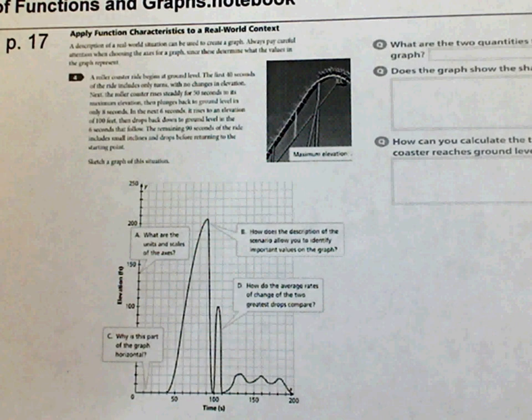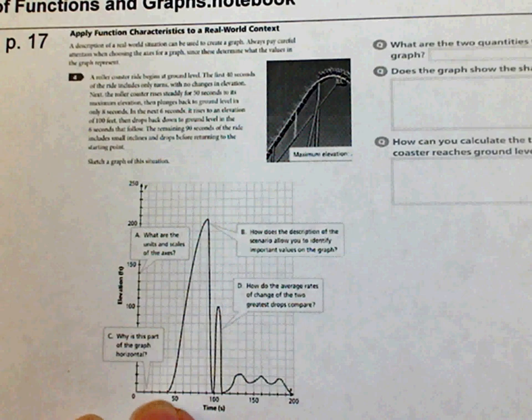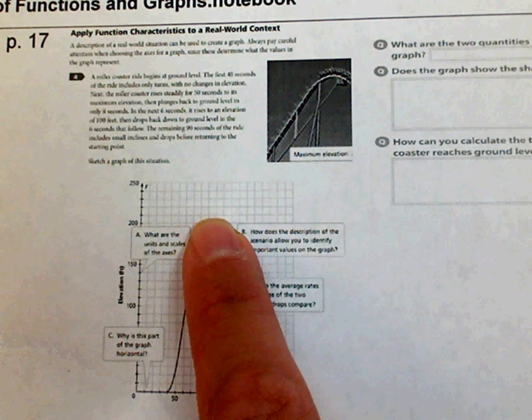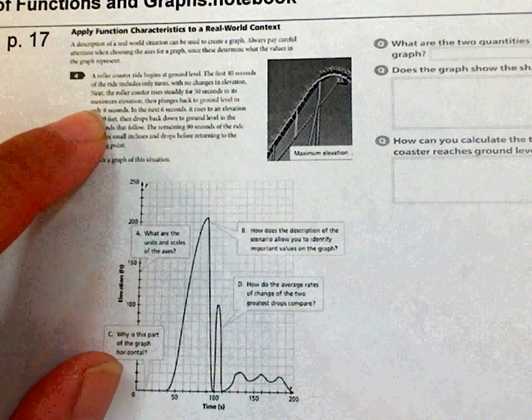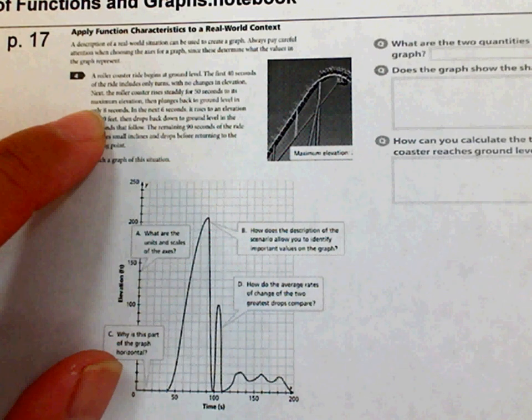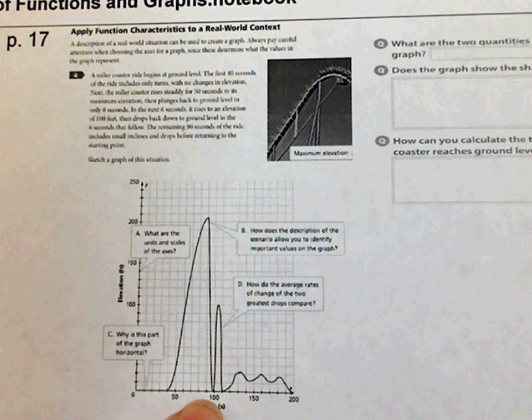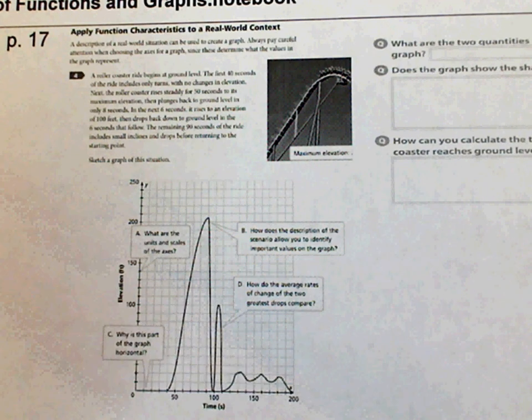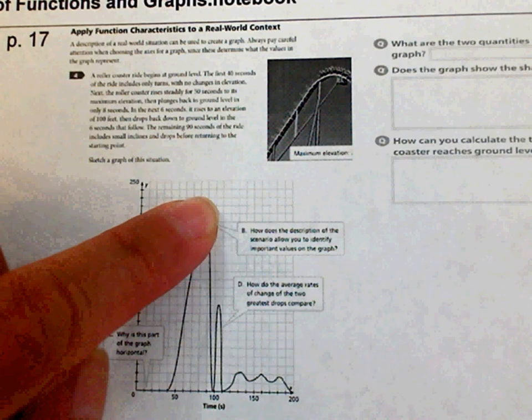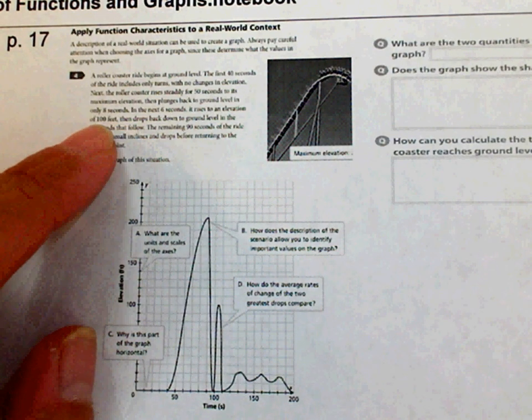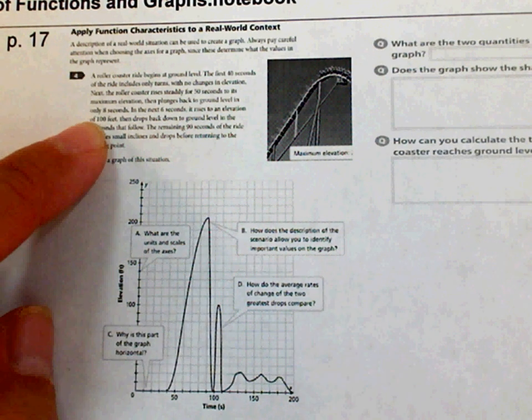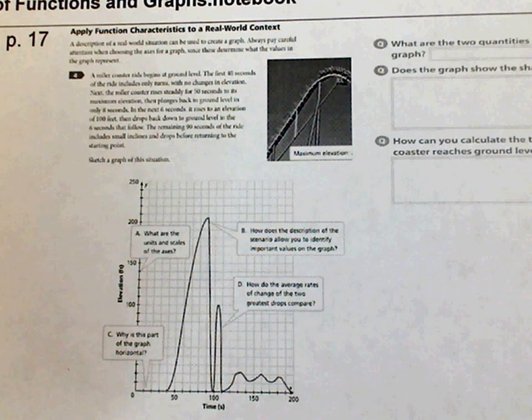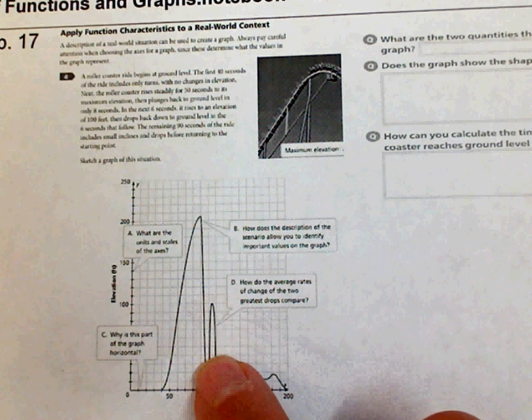A roller coaster begins at ground level. So this is at the ground. The first 40 seconds. After 40 seconds, you notice it goes up a lot. So it's trying to climb as high as it can so gravity can take over. With changes in elevation. Next, the roller coaster rises steadily for 50 seconds. So from here to about right here, which is about 90, it's maximum elevation. Then it plummets back to the ground. And then gravity just kind of takes over. And that's how you get roller coasters. So the hard part is trying to get up there. In the next 6 seconds, it rises to an elevation of 100 feet. As you can see right there. Drops back down to the ground level in 6 seconds that follow. The remaining 90 seconds of the ride includes small inclines and drops before returning to the ground. So gravity is causing it to go up and then it comes down, still has more speed, and now it slowly comes back to the ground.